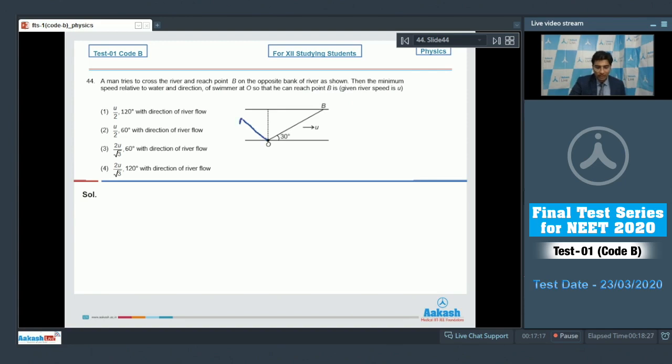Dear students, let the man try to swim in this direction with the speed V. The net speed of the man or the velocity of the man should be along the line OB. The velocity of the man with respect to ground can be written as, if this angle is taken as theta, then it would be U minus V sin theta I cap plus V cos theta J cap. Now dear students, for the velocity of the man to be along this line, tan 30 should be equal to J component by I component, that is V cos theta by U minus V sin theta, which on simplification gives that V would be equal to U by root 3 cos theta plus sin theta.